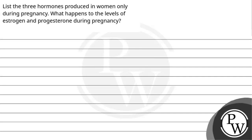Hello, children. Let's see this question. The question over here says: List the three hormones produced in women only during pregnancy. What happens to the levels of estrogen and progesterone during pregnancy?